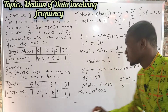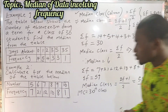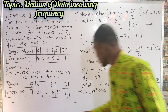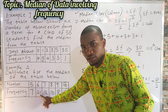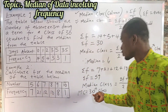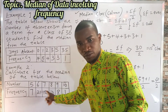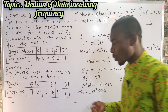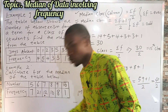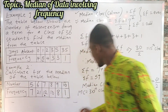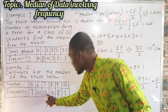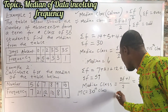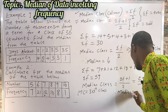We now add up the frequencies to locate the 30th class. The first frequency is 7, which is not up to 30. Then 7 + 21 = 28, still not up to 30. Then 28 + 12 = 40, which is up to 30. So the 30th class lies in the third column. The number on top of this third column is 7. Therefore, our median is equal to 7.